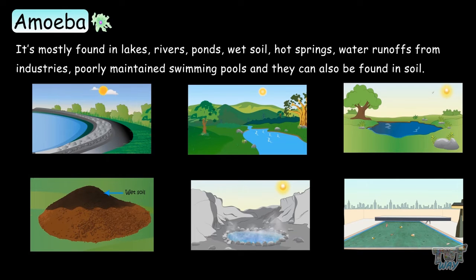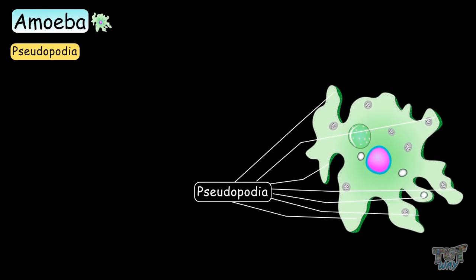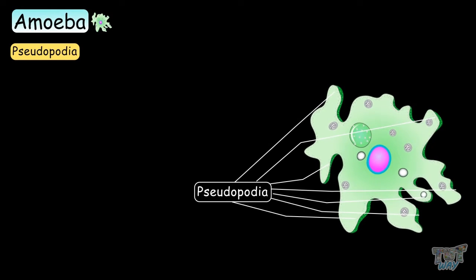Now let's learn about the various parts of an amoeba and their functions. First, pseudopodia — this is the false feet, or pseudopodia, of the amoeba. We will learn its role later on.